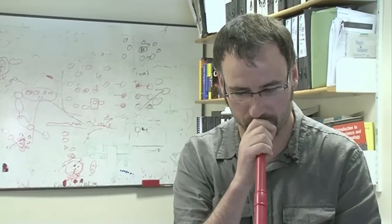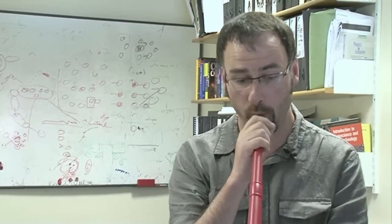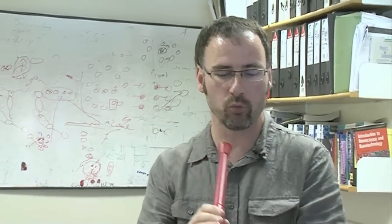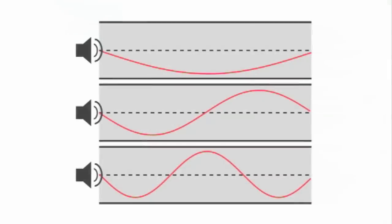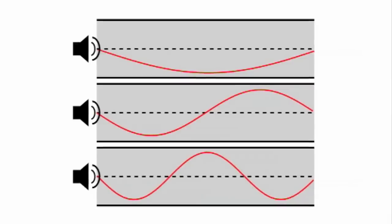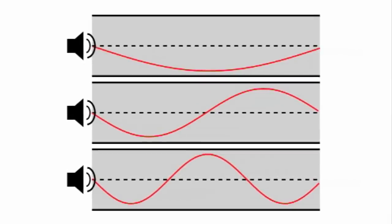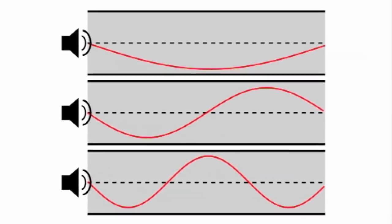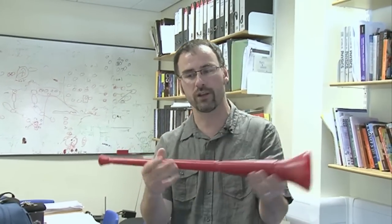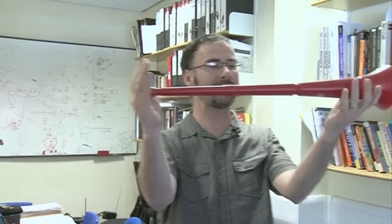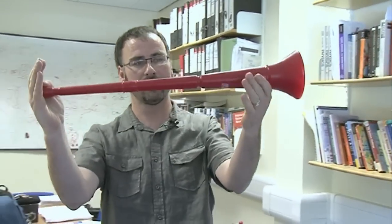Like any other wind instrument or thing that you blow into, the way it works is that you set up a resonance of air inside the column. It's that resonance of air — the air moving back and forth rapidly inside the column — at a particular frequency, which is set by the length of the column.